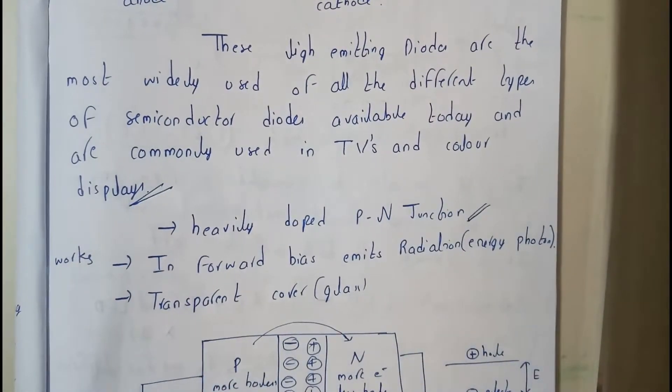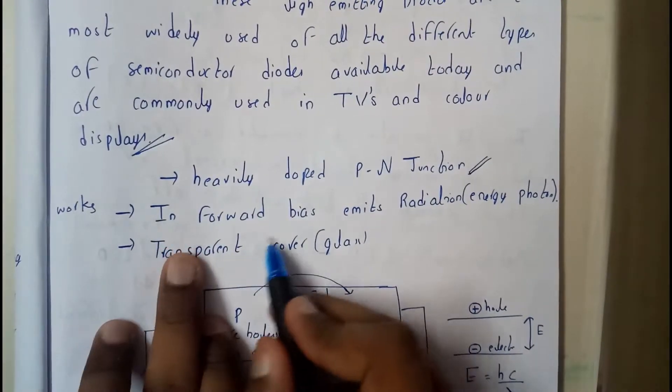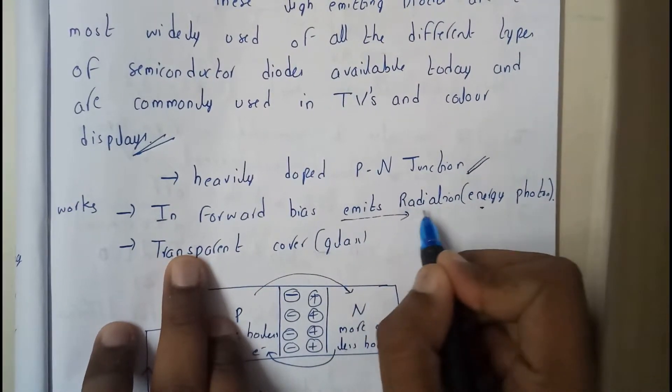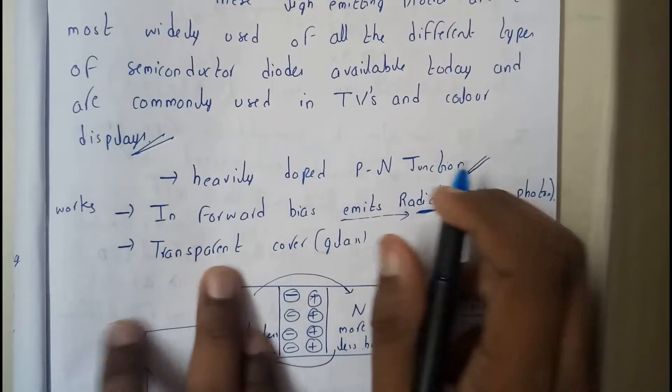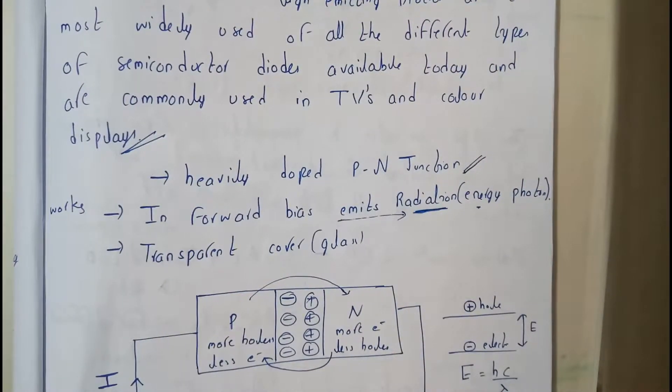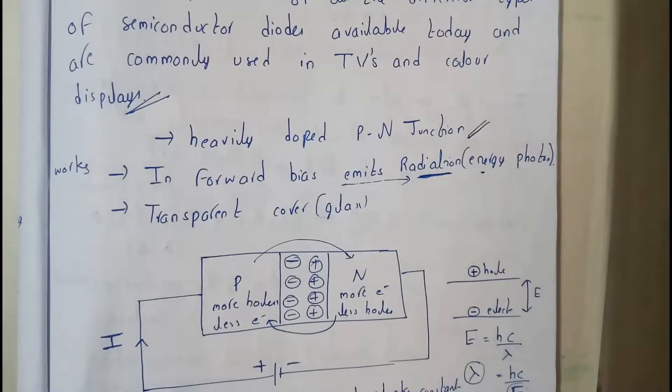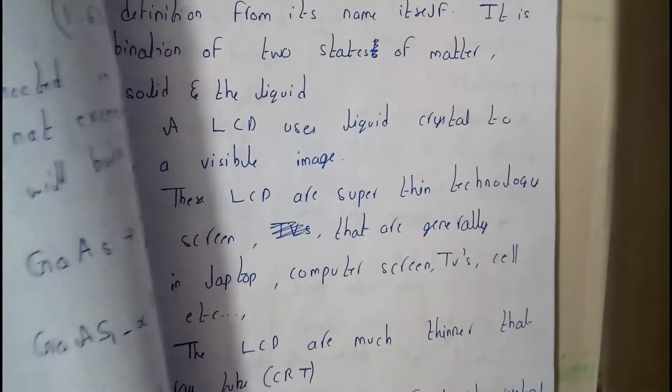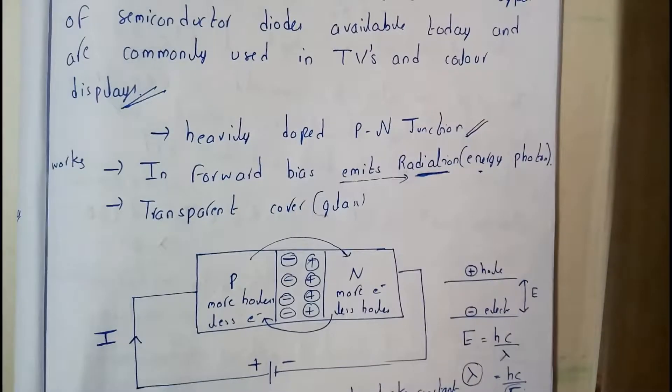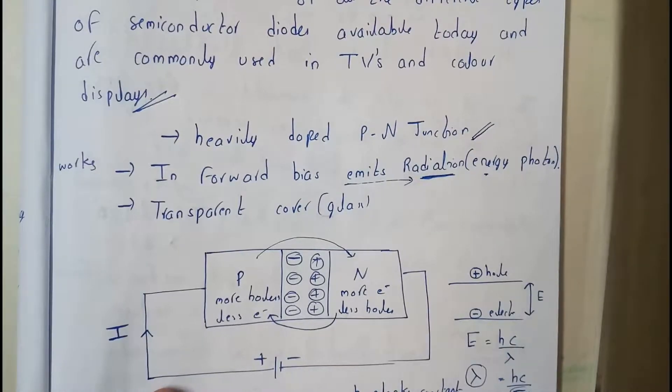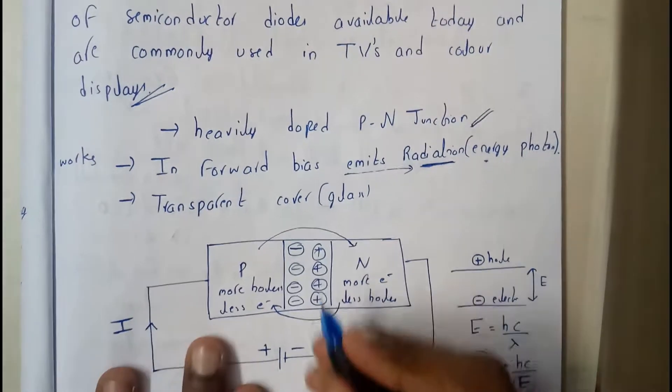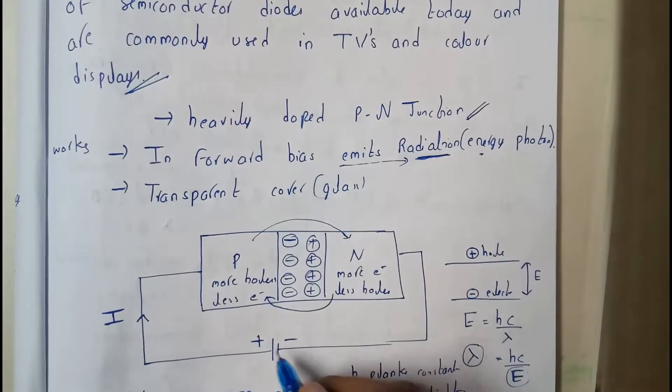It basically works in the forward bias emitting a large amount of radiation, which is nothing but energy. So basically this is how it works. It is really a simple process so let us go through that so that it will be clear for you.